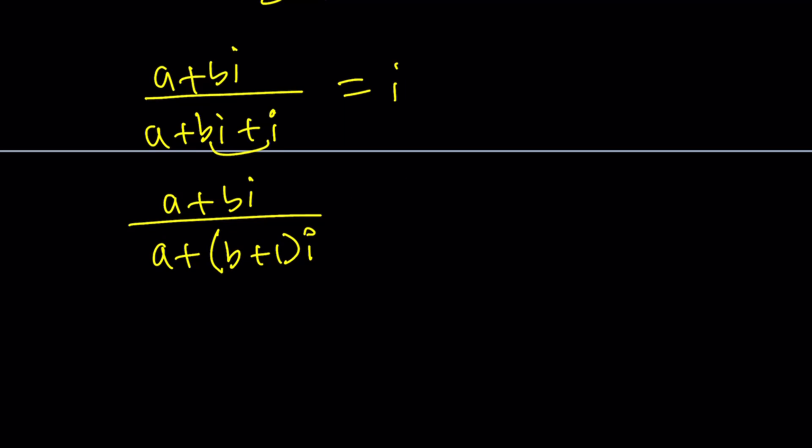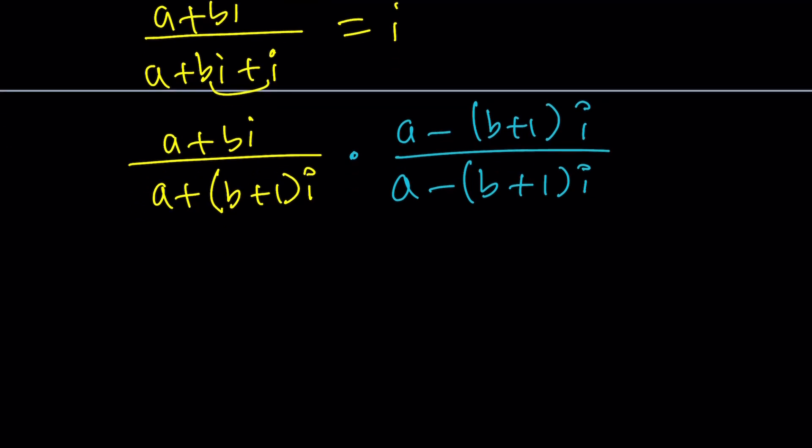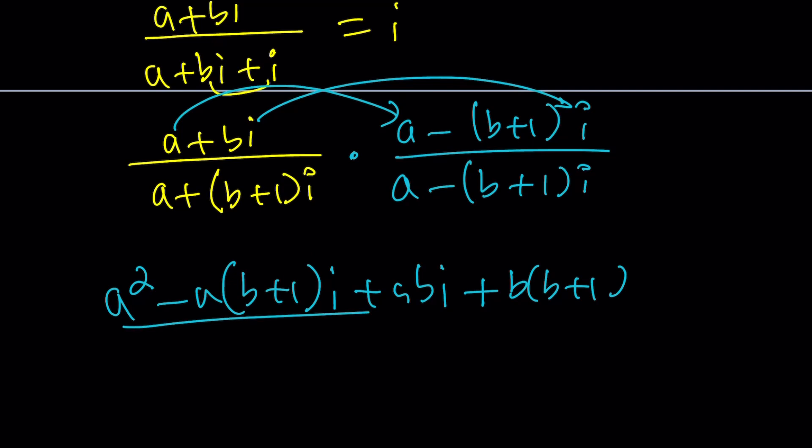This is more fun, isn't it? I don't even know what A and B are. But I do know that the conjugate would be A minus B plus one I. And of course, I have to do it in the numerator too. Now when I distribute, obviously, this is going to be pretty hectic. But let's do it. A squared minus A times B plus one I. And then plus A B I. And then I times I is negative one. And then that's going to negate the negative. And we're going to get B times B plus one. And all of that is divided by A squared plus B plus one squared.